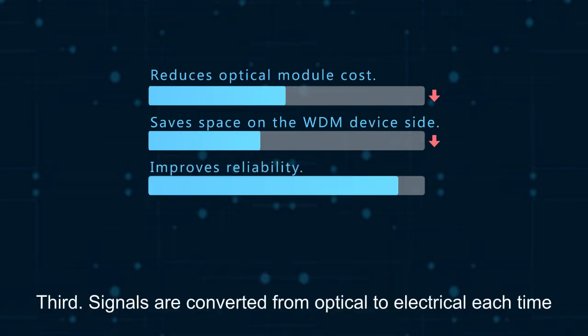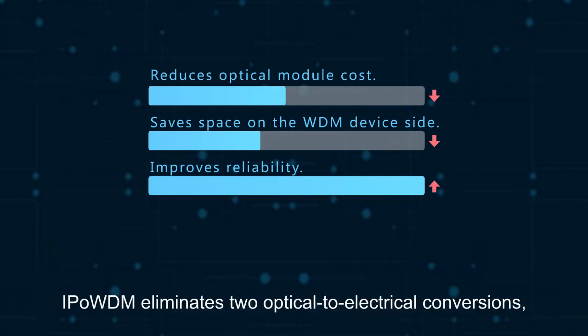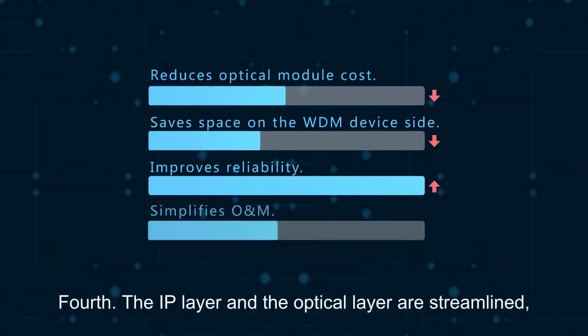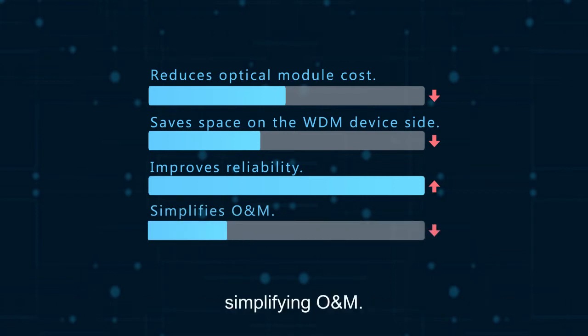Third, signals are converted from optical to electrical each time an optical module is used. By using colored optical signals, IP over WDM eliminates two optical-to-electrical conversions, improving reliability. Fourth, the IP layer and the optical layer are streamlined, simplifying O&M.